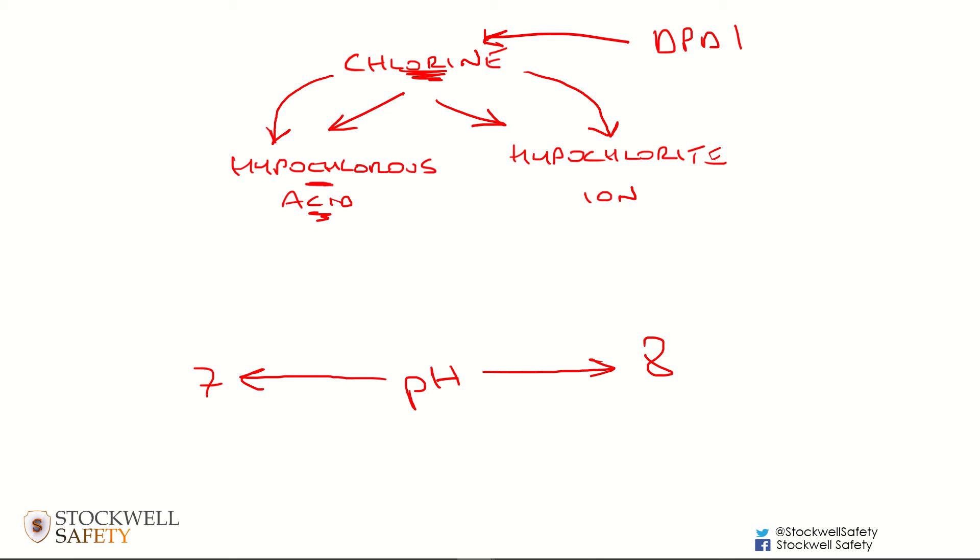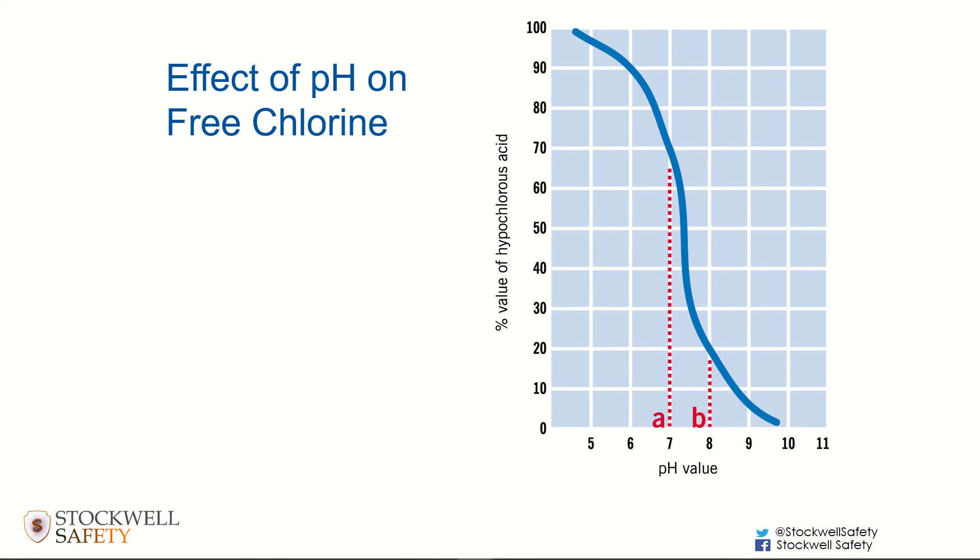That's why you do the pH test. You do the DPD1 test to make sure you've got enough chlorine, and then you do a phenol red tablet test to ensure that your chlorine is turning into the useful hypochlorous acid. Otherwise, the chlorine is still going to be there, but if the pH goes too high, even though the chlorine is there, it's not really doing much in terms of useful work.